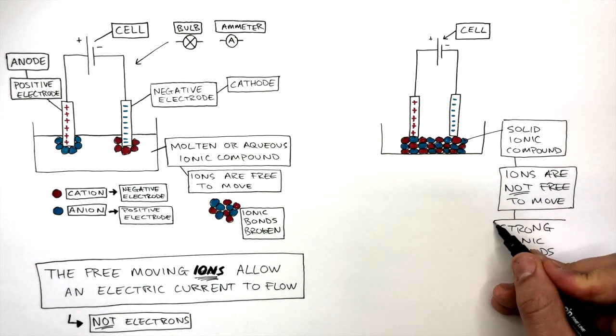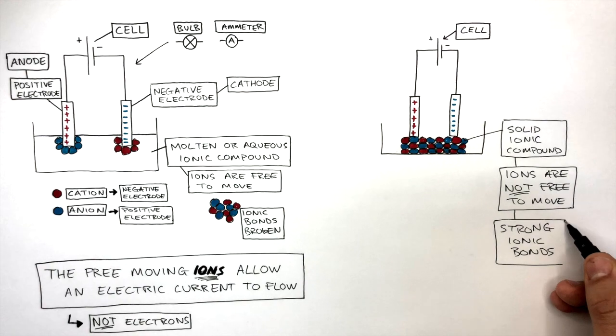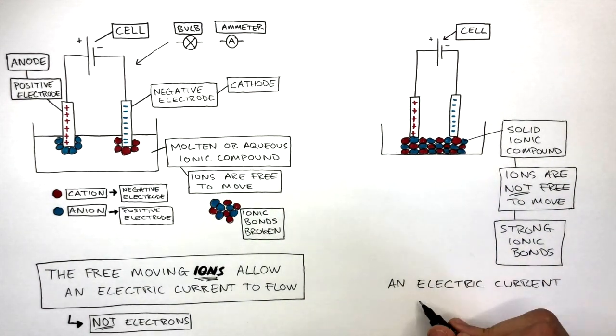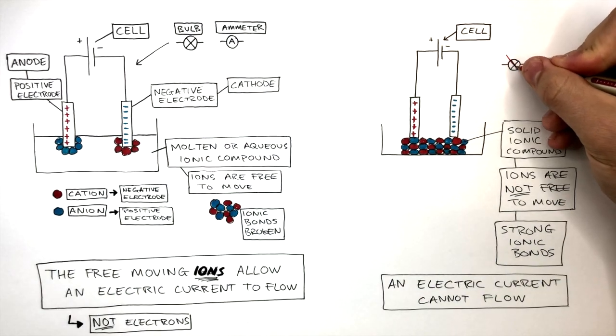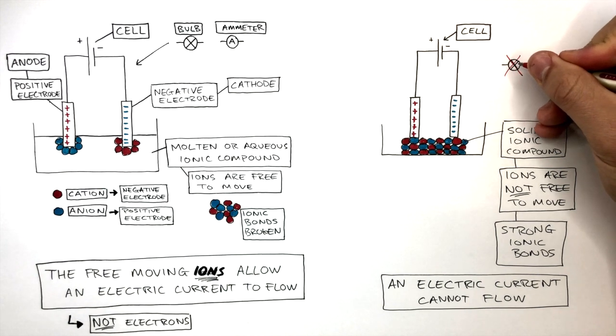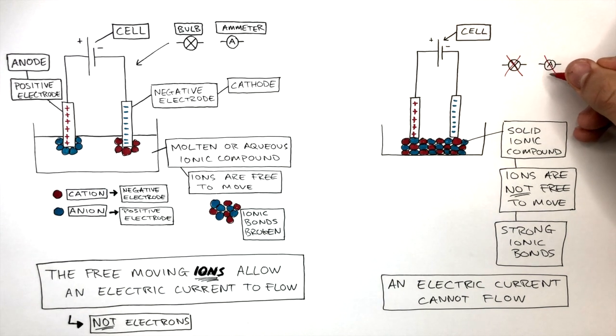As the ions are not free to move towards the electrodes, an electric current cannot flow. Therefore, a bulb will not work and an ammeter will have no readings.